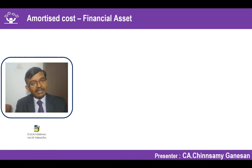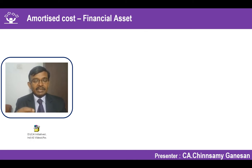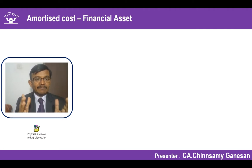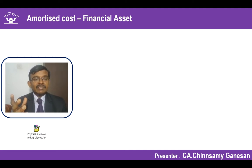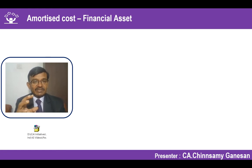Fair value through P&L means: initially recognize at fair value, subsequently remeasure at fair value, and route the fair value changes between periods through the profit and loss account. If the fair value changes are routed through OCI, it is called fair value through OCI. The third classification is amortized cost - which applies when both the SPPI test is met and the business model is to collect SPPI cash flows. How is amortized cost defined? Amortized cost equals the cash paid for making the investment, minus principal repayments collected, plus or minus any unamortized premium or discount, minus credit-risk-related impairment.